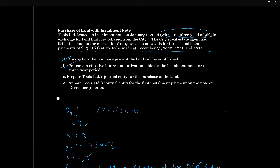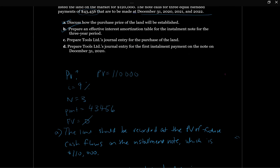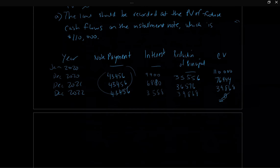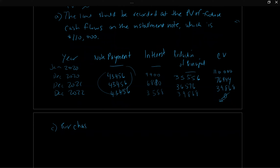Part C: prepare Tools Limited's journal entry for the purchase of the land. We're going to debit land and credit notes payable for $110,000, which was the present value of the note. That's how it's going to start out on our statement of financial position.